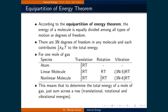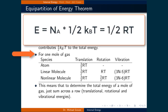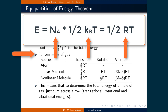We can use this expression for the total kinetic energy to determine the energy of other motions of molecules. This can be done using the equipartition theorem, which states that the energy of a molecule is equally divided among all types of motion, or degrees of freedom. There are three n degrees of freedom in any molecule, and each contributes one-half times the Boltzmann constant times the temperature to the total energy. For a mole of gas, each degree of freedom contributes one-half times the gas constant times the temperature, because Avogadro's number times the Boltzmann constant equals the gas constant R, giving one-half RT.